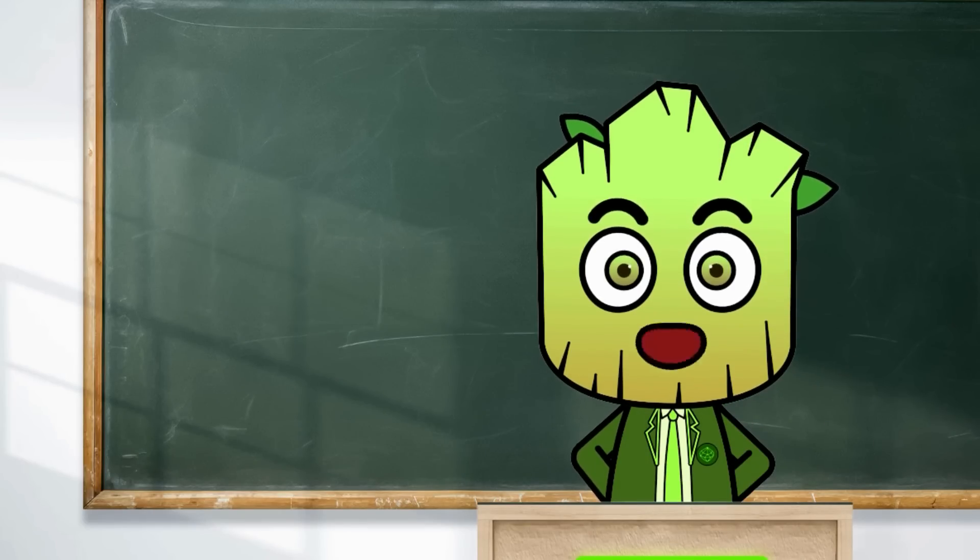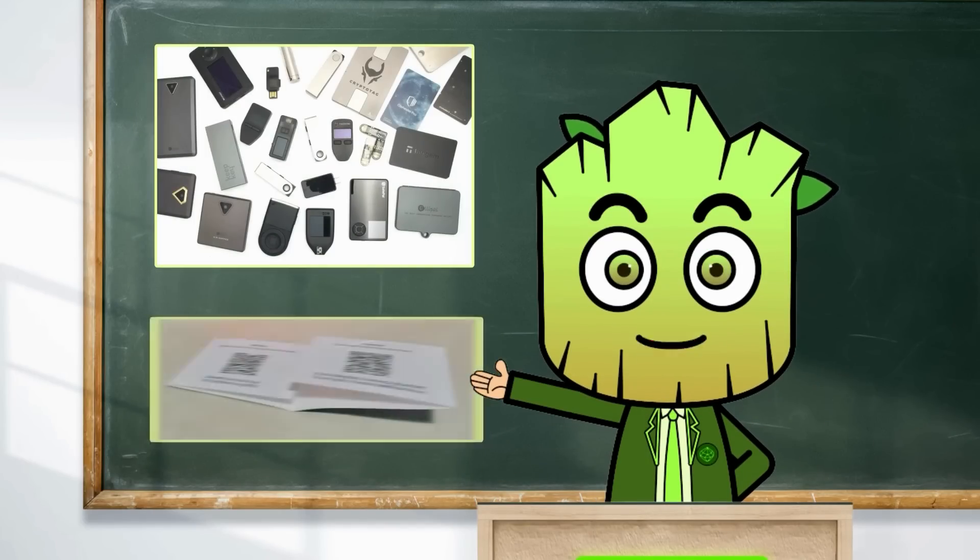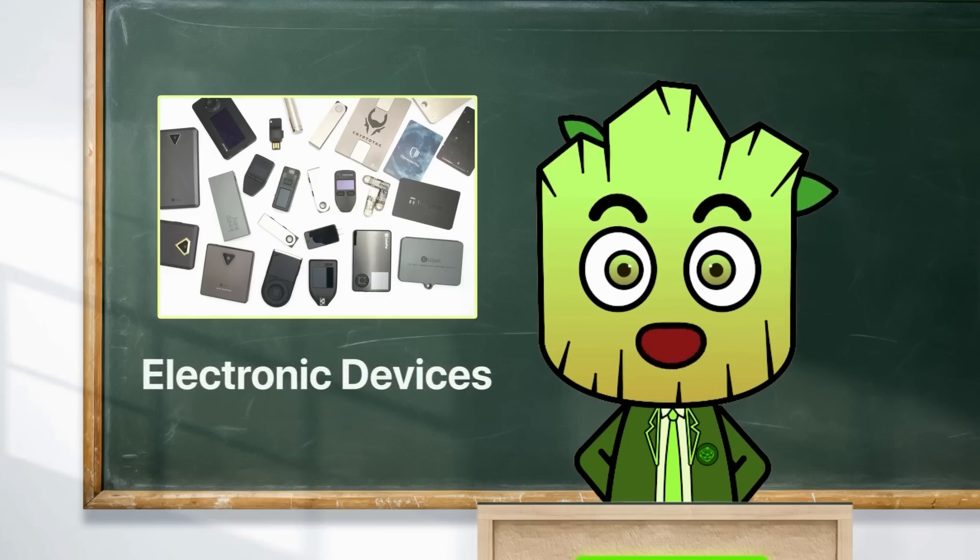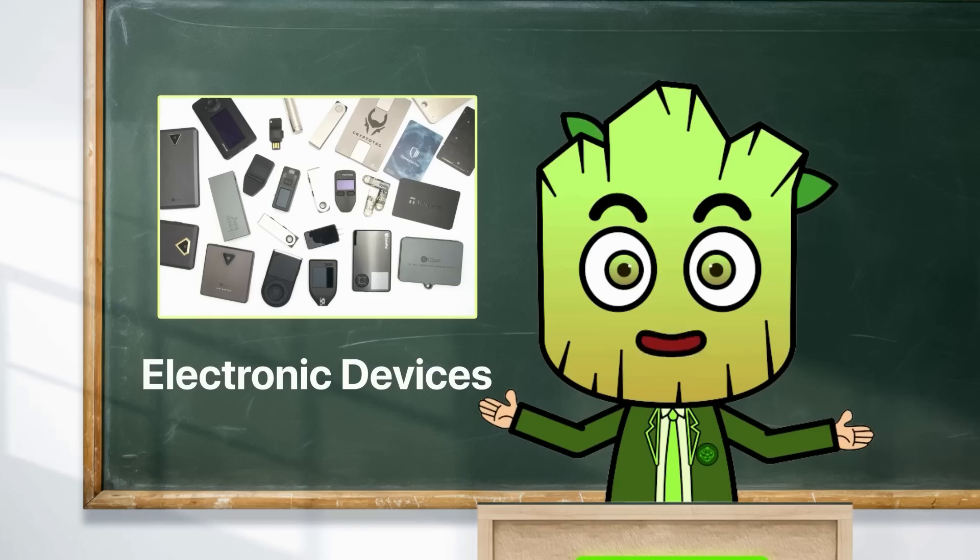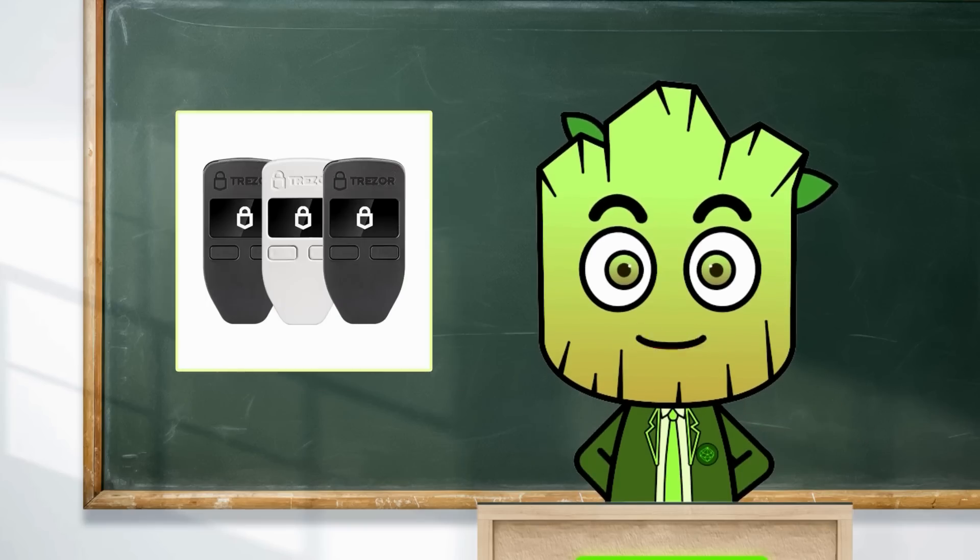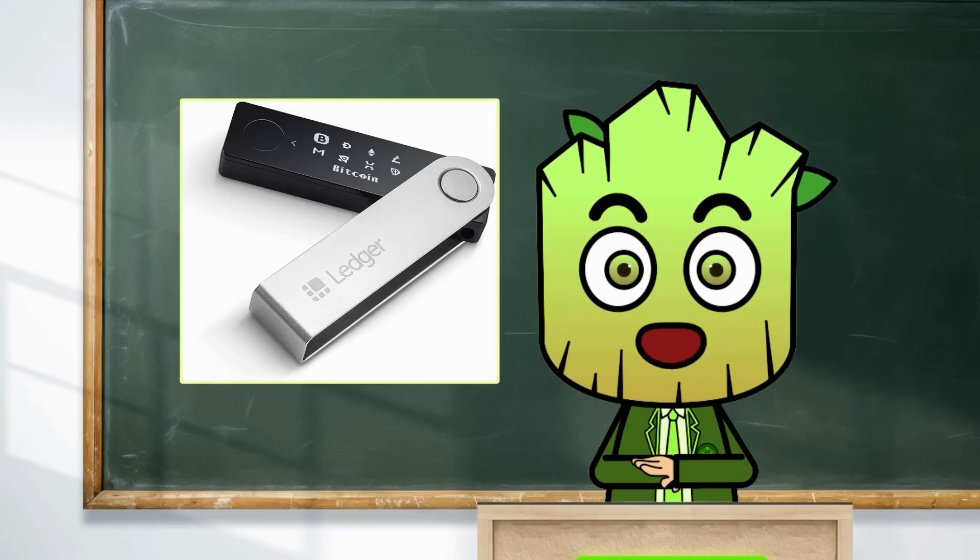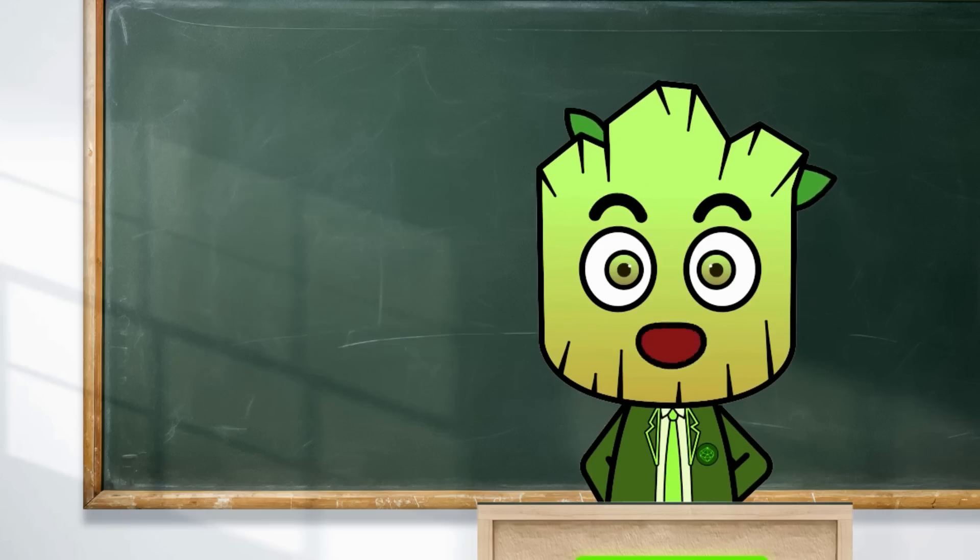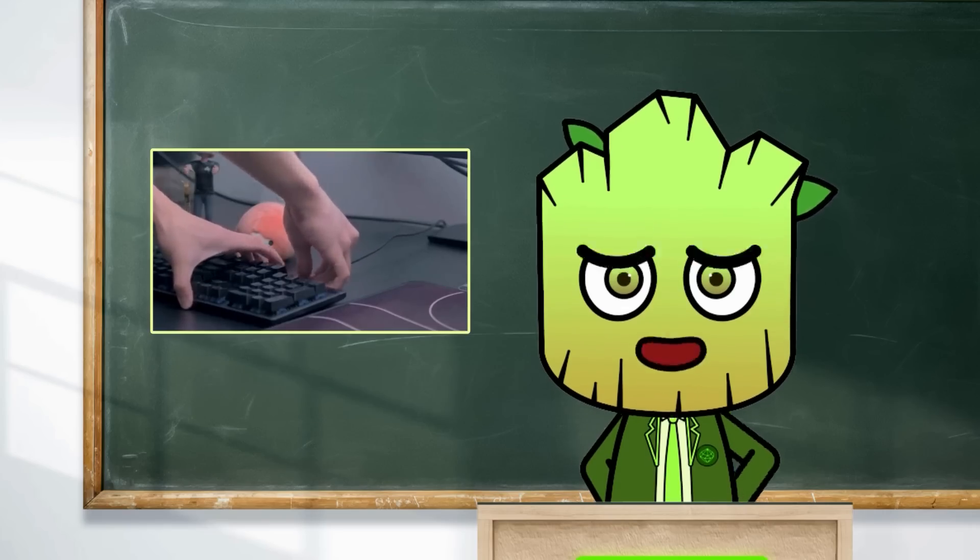Hardware wallets are electronic devices that function similarly to a USB stick, like Trezor or Ledger, the two widely used cold wallets. Once they are plugged into a computer, the owner can access the crypto they stored in the wallet.